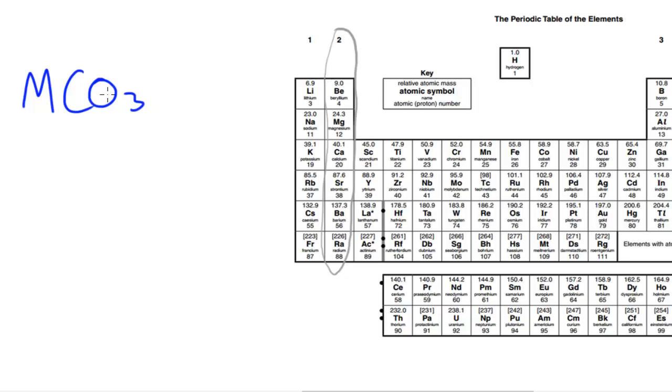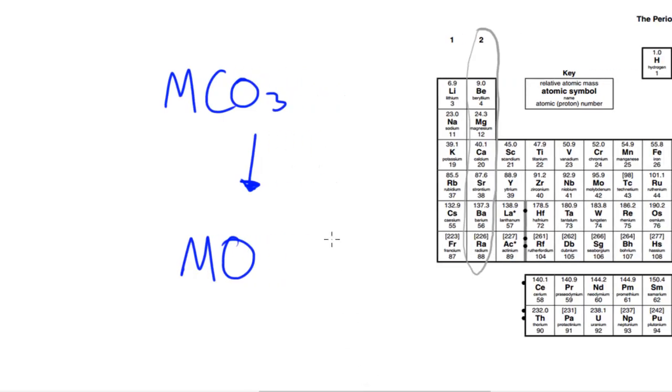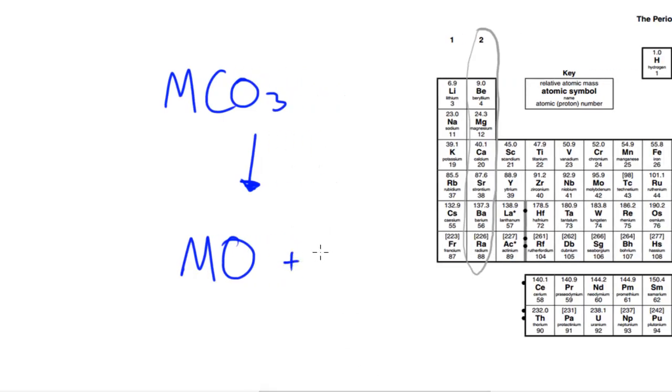When this thermally decomposes, it will form two products. One of the products would be the metal oxide, MO, so this is the oxide of that group 2 element, and the other product formed is carbon dioxide, CO2.